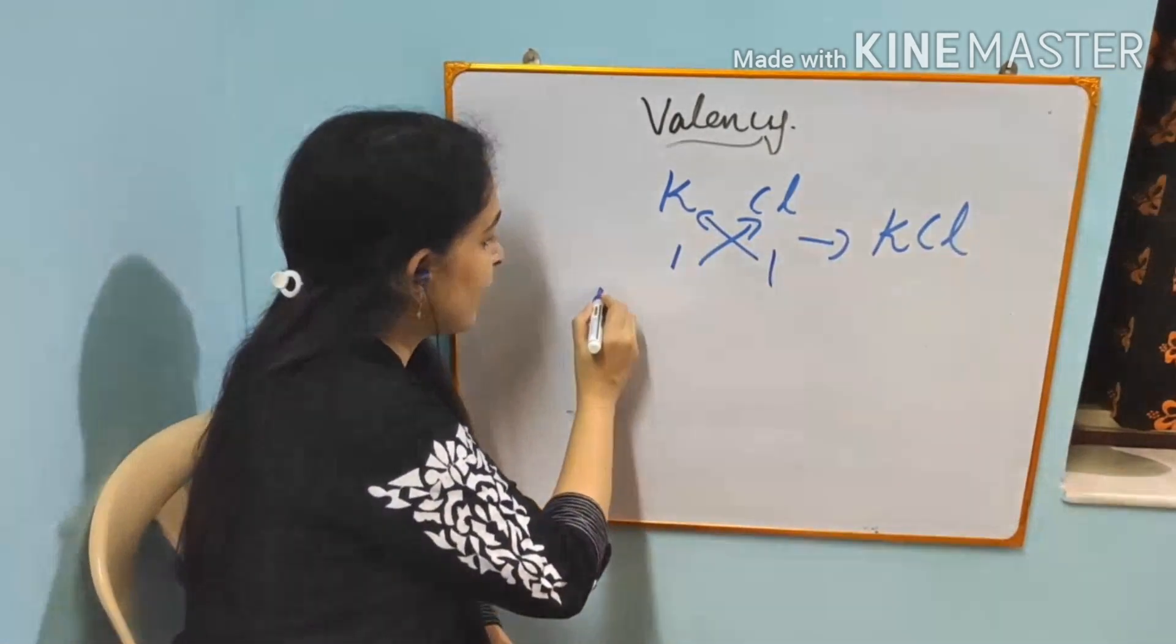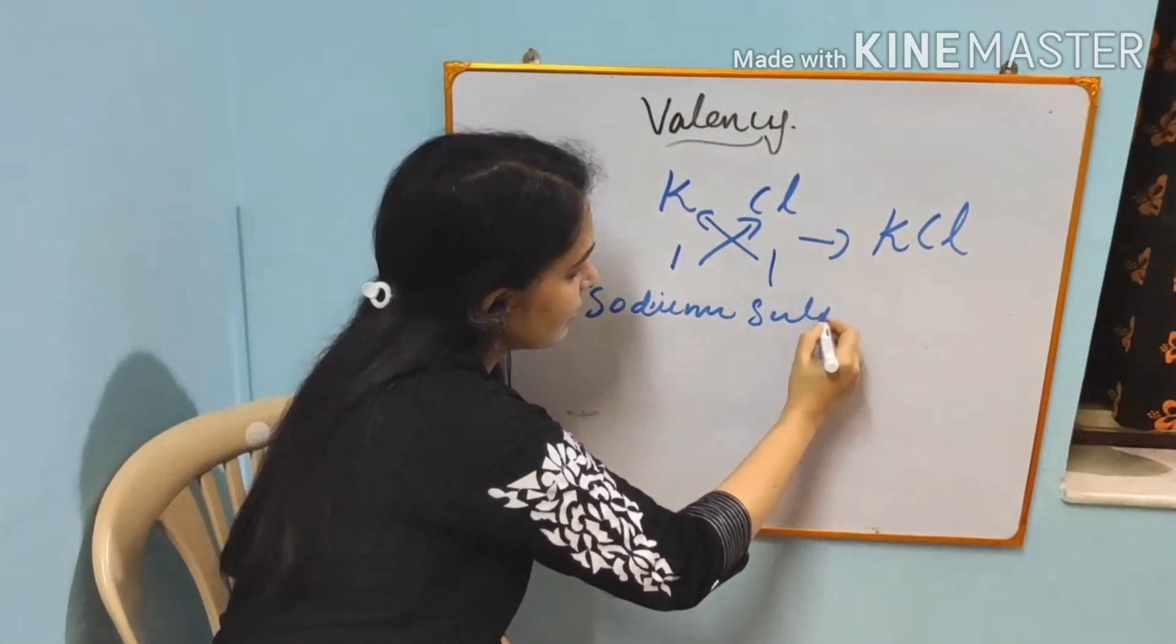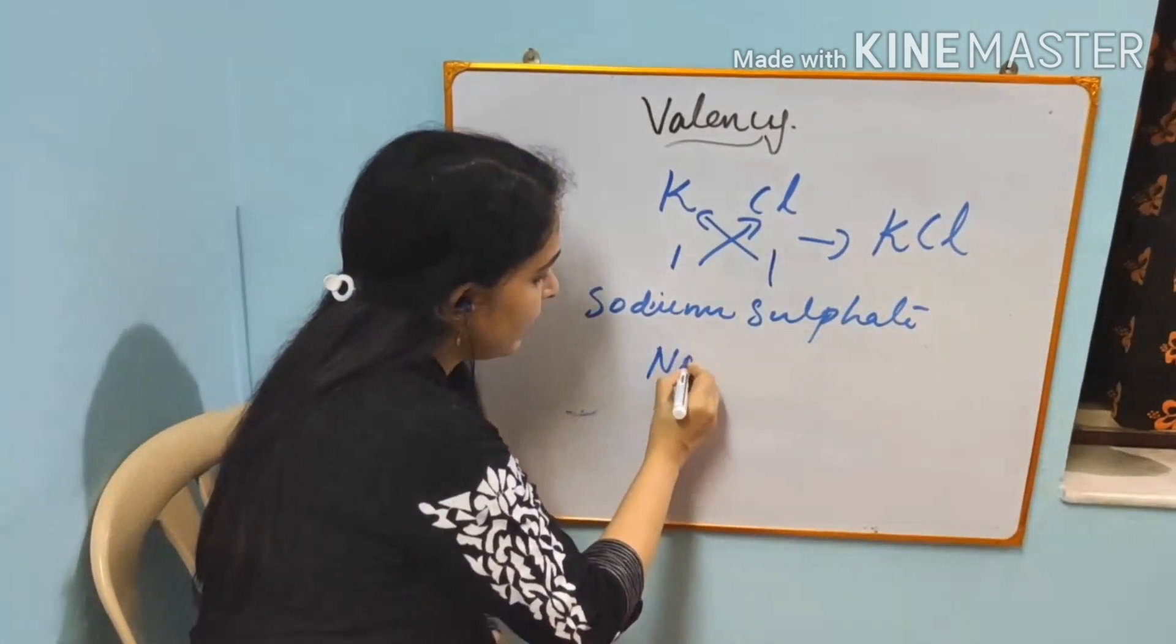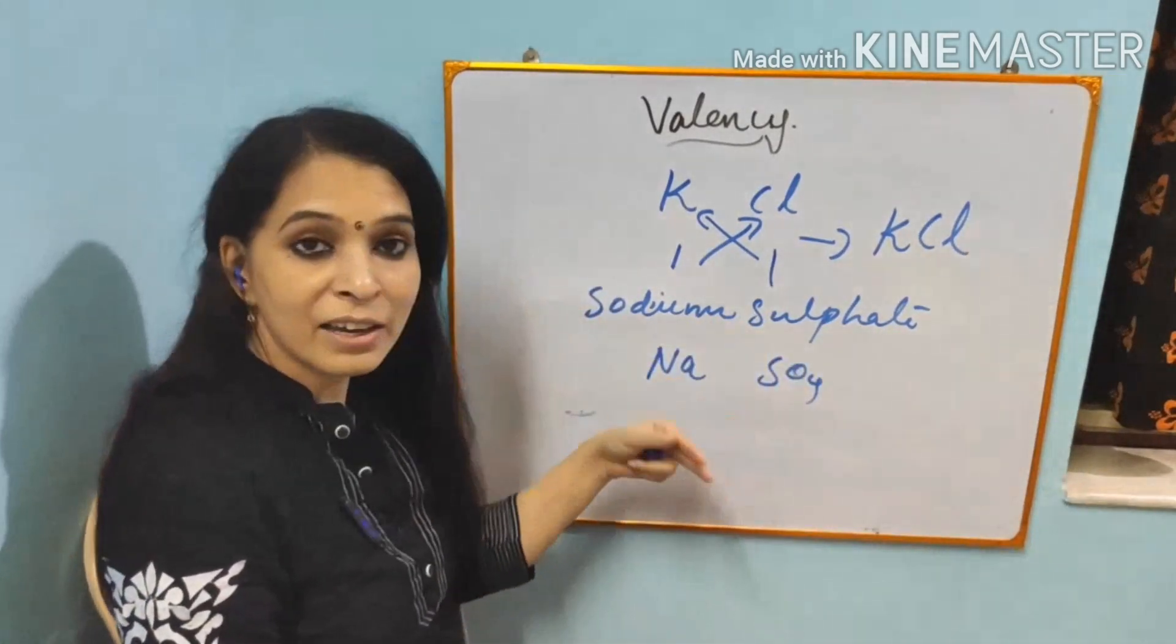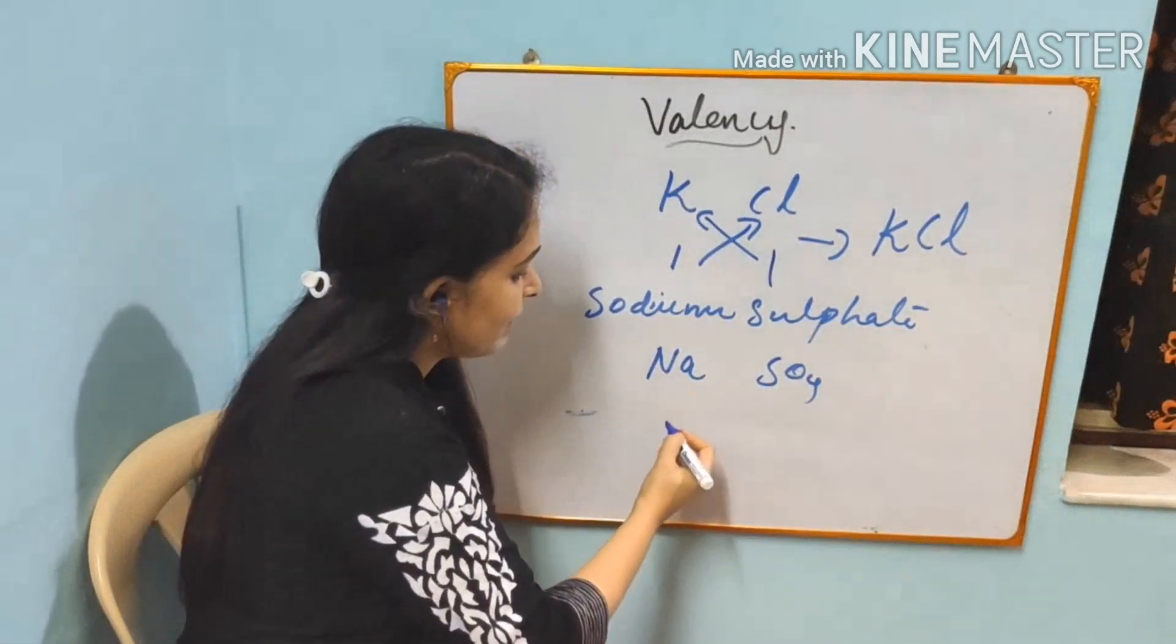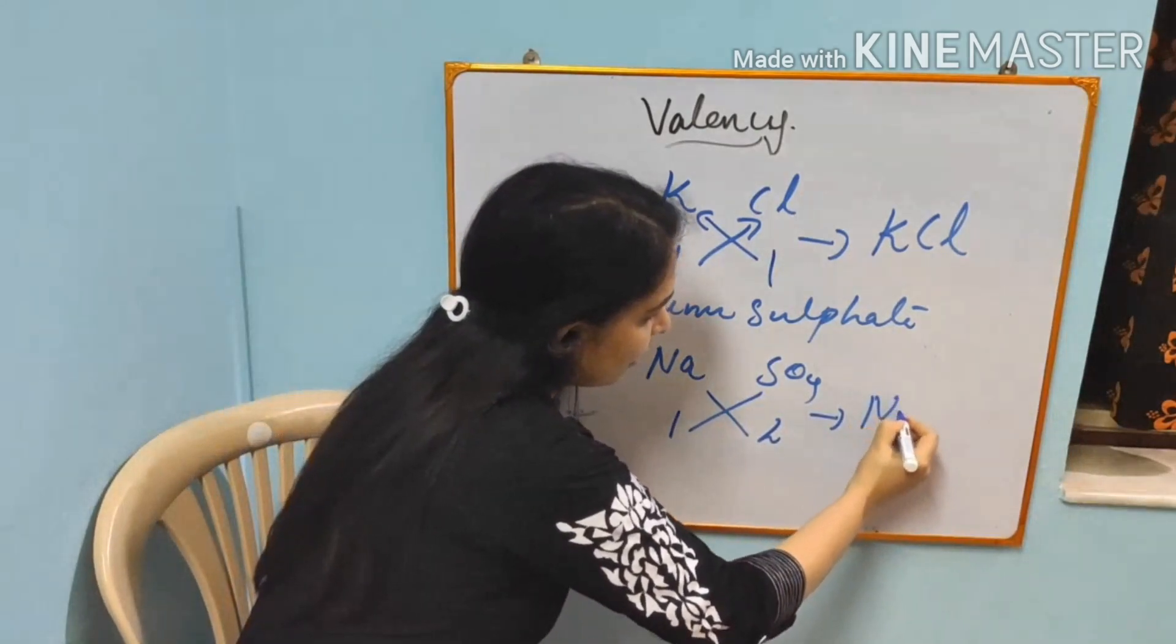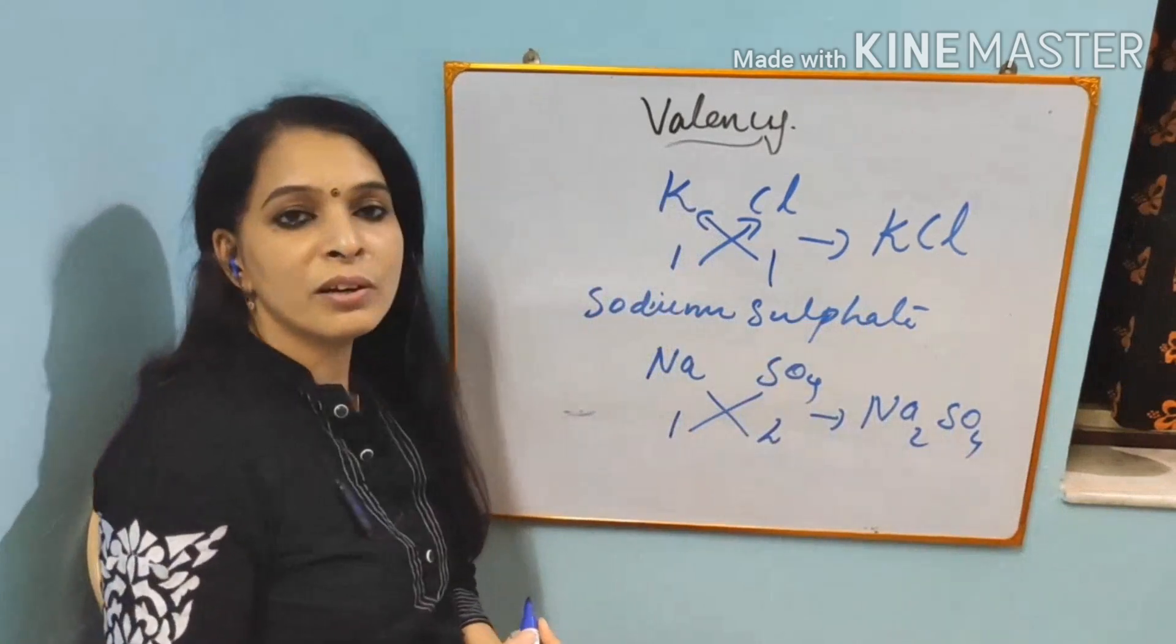Now next, another example I will tell you, sodium sulfate. The symbol of sodium is Na. Sulfate is SO4. Listen to it. I have explained before how to find out the valency. Now sodium valency is 1. Sulfate valency is 2. We will criss-cross it. You will get the formula. Na2SO4. This is how you are writing the formula. Now you can take any ionic compounds and see how to write the formula.